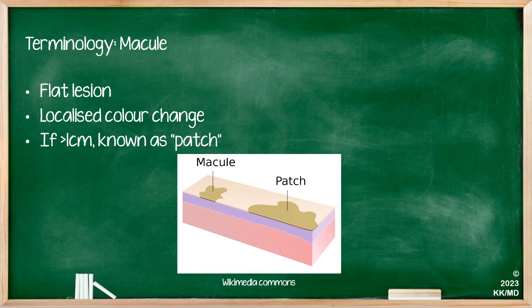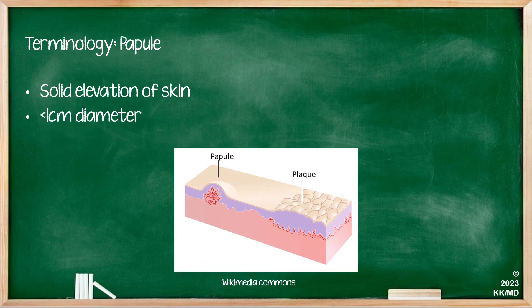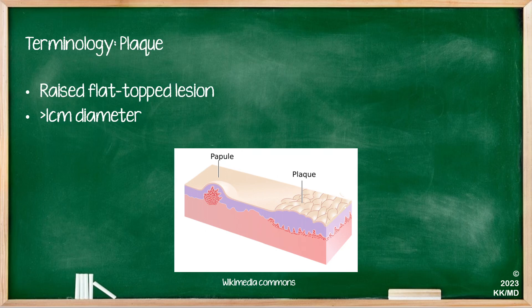We thought it's important to lay the groundwork here so that when we use these vocabularies and terminologies later in our other videos, you are familiar with them. So, first: a macule is a flat lesion that is less than one centimetre. If it's more than one centimetre, it is called a patch, and it leads to a localised colour change in the skin. A papule is a solid elevation of the skin less than one centimetre in diameter, and if it's more than that it's called a plaque, which is a raised flat-topped lesion more than one centimetre in diameter.